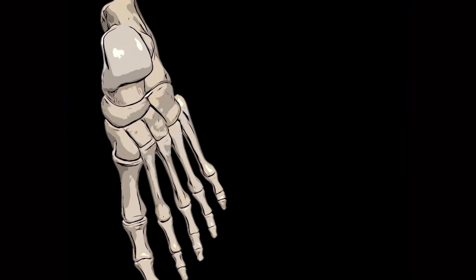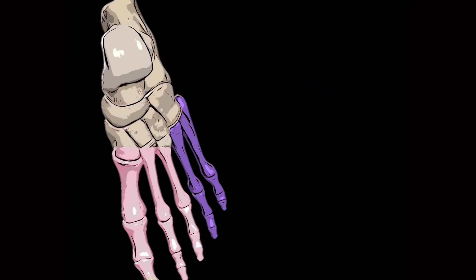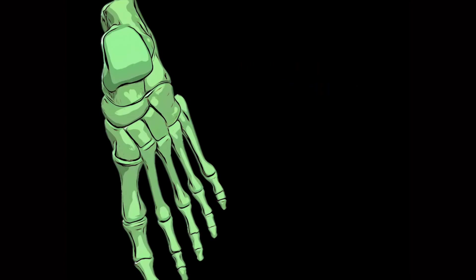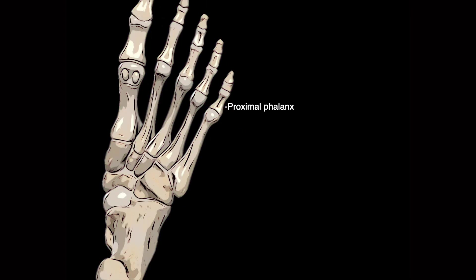The forefoot is composed of the metatarsals, phalanges, and sesamoid bones. In the medial to lateral or transverse plane, the forefoot can be divided into the medial column and the lateral column. The medial column consists of rays one, two, and three, with a ray defined as the metatarsal and related phalanges. The lateral column is composed of rays four and five.